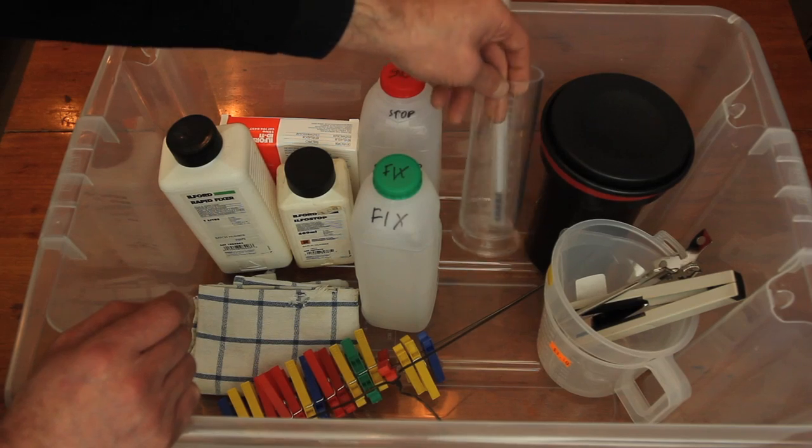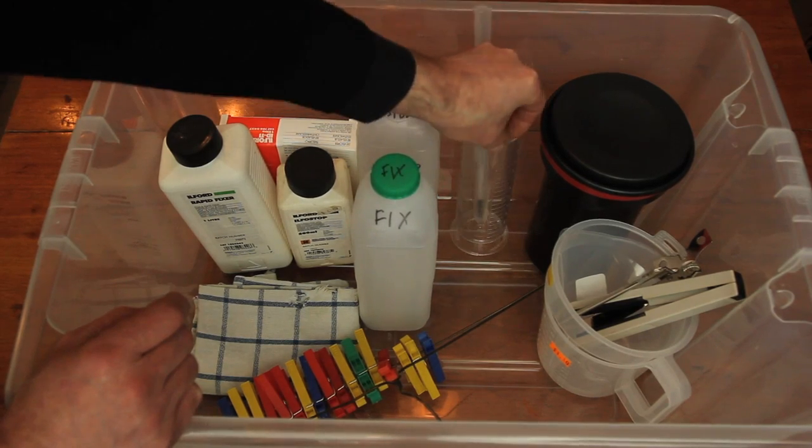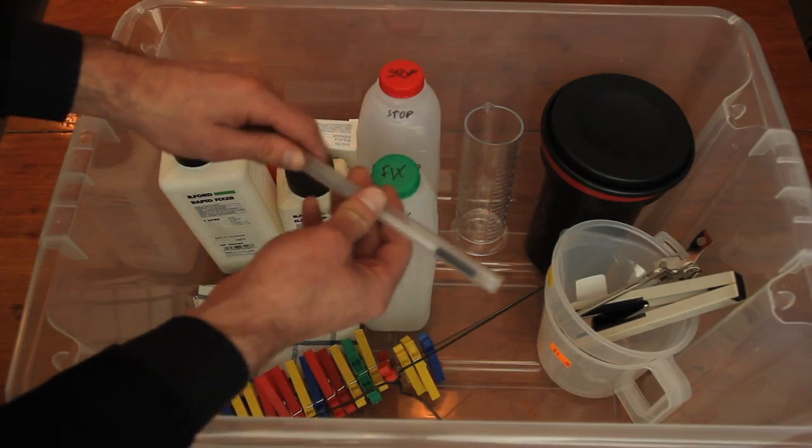Then a measuring jug, you've got to get a measuring jug. This is a Paterson 600ml measuring jug, that's probably all the size you want. Thermometer.